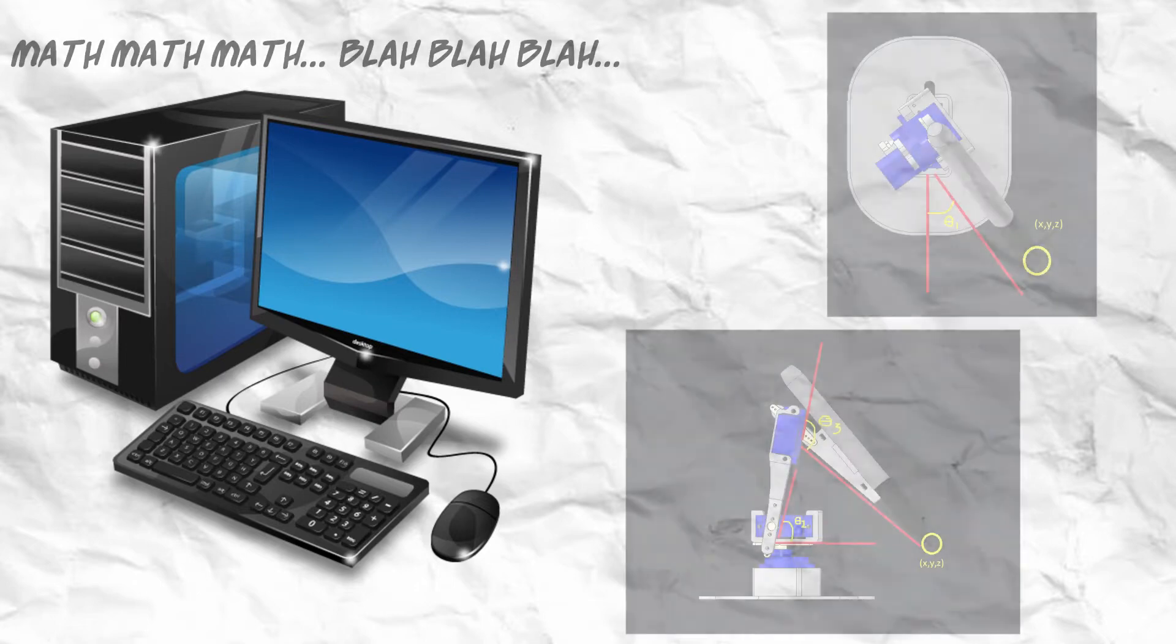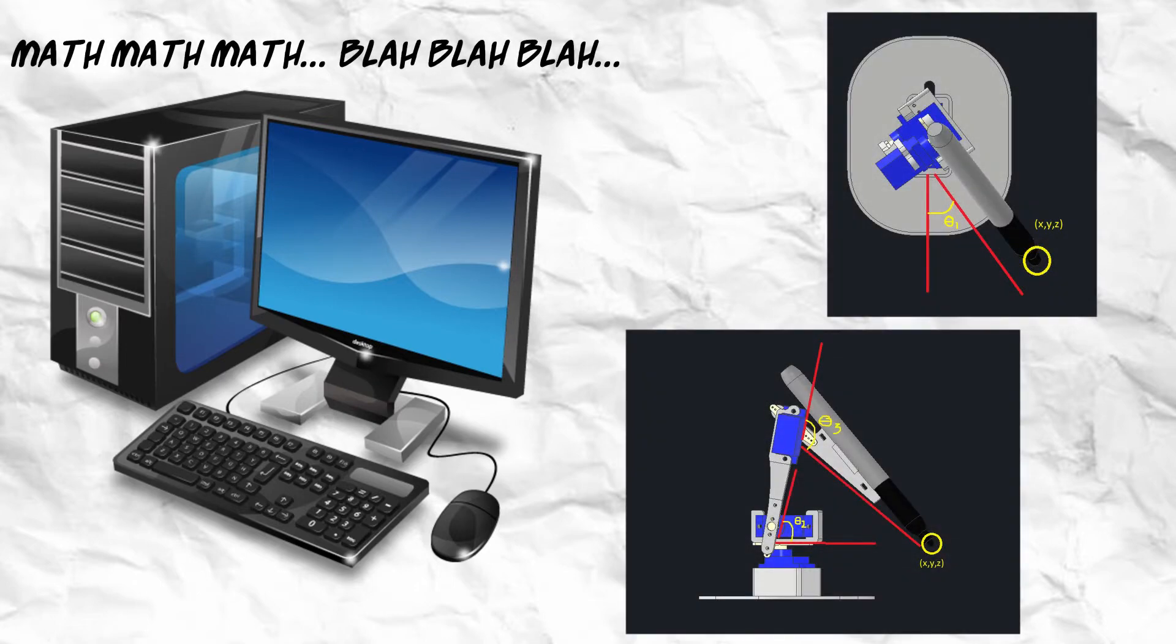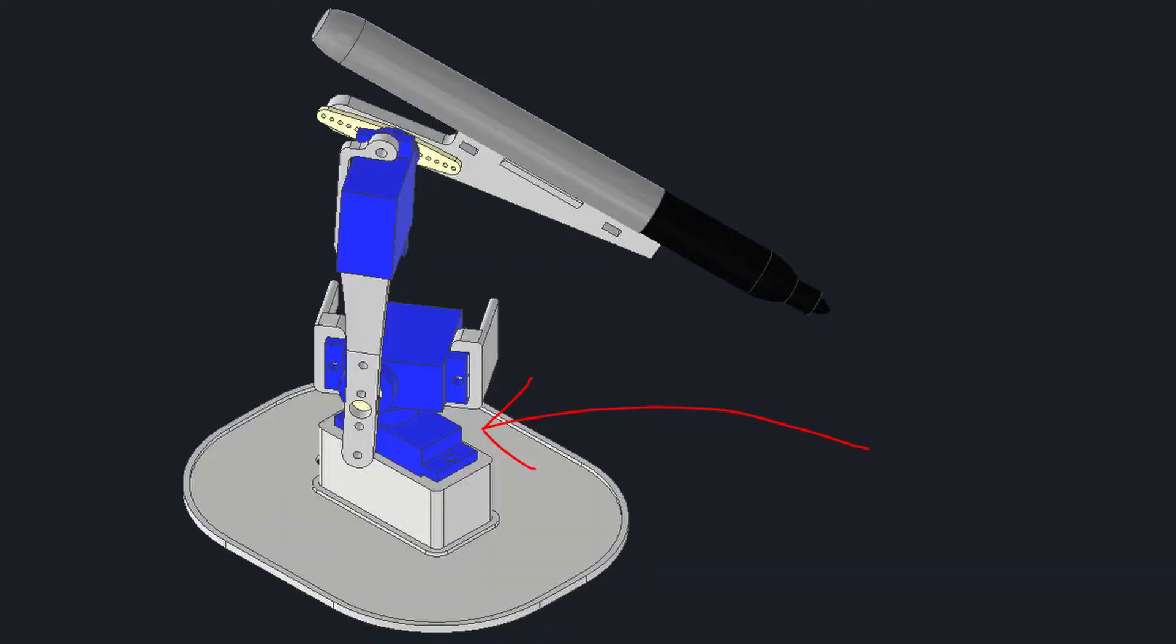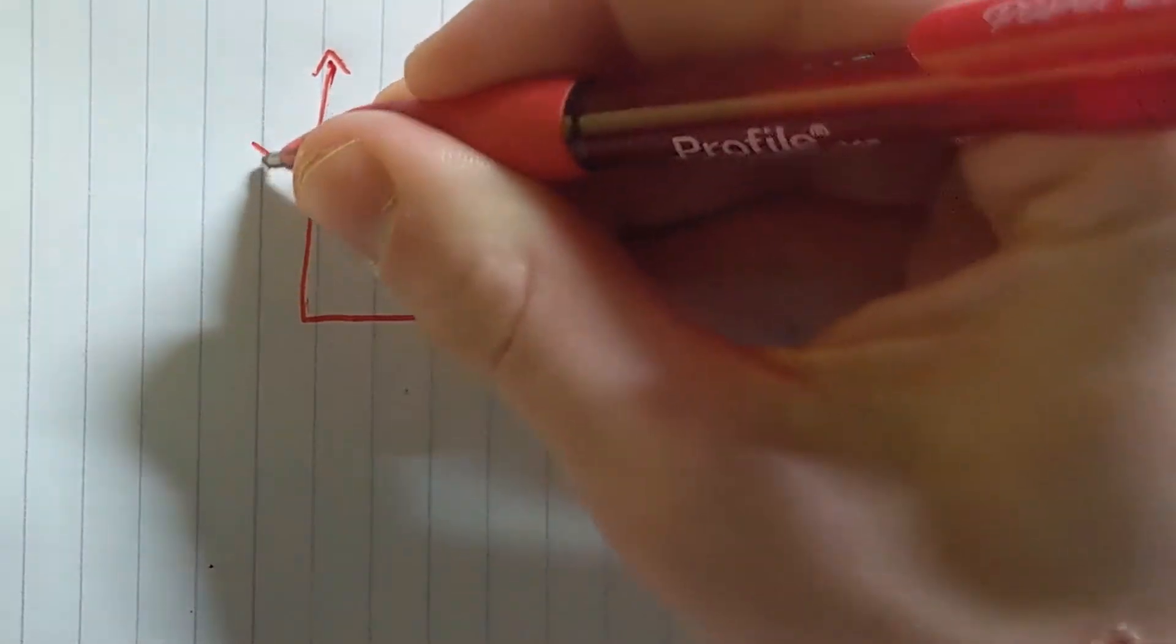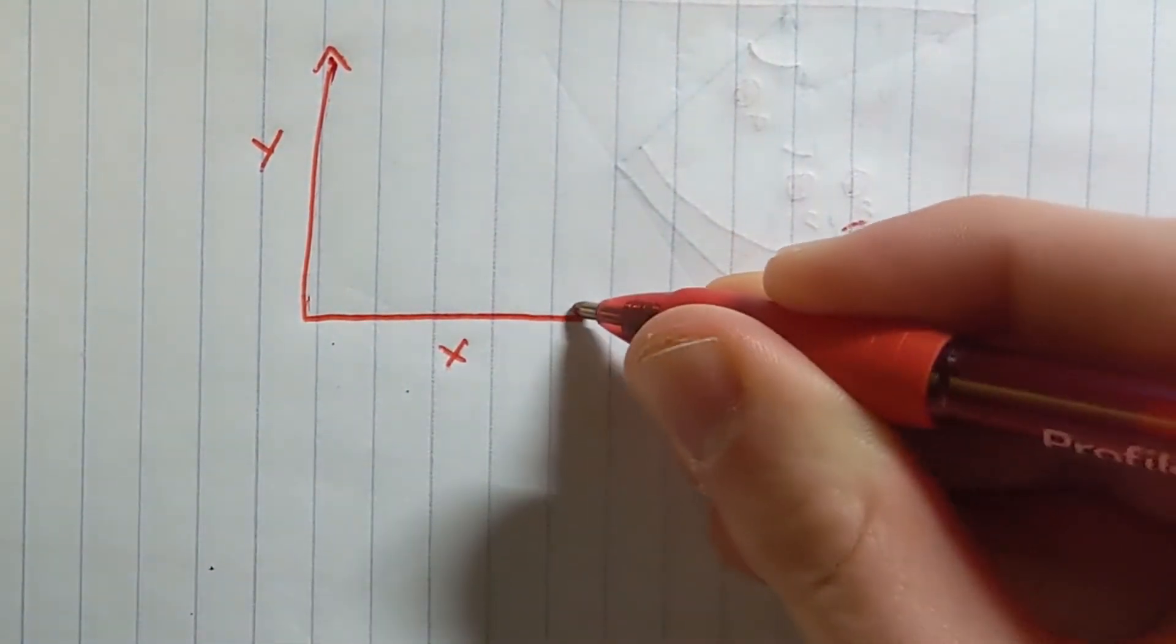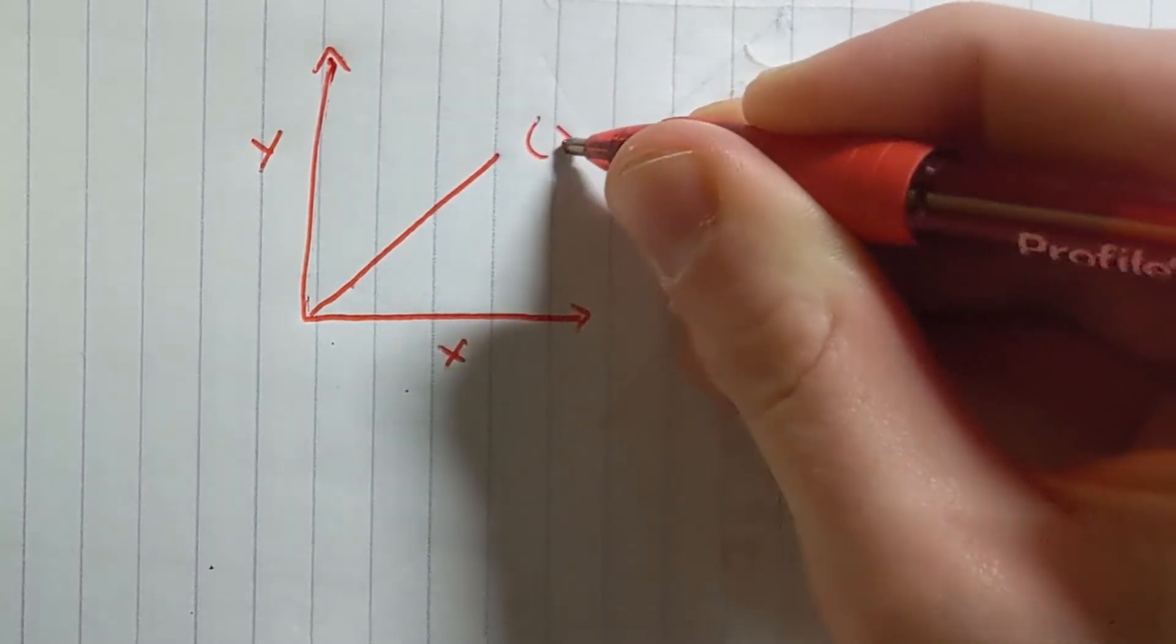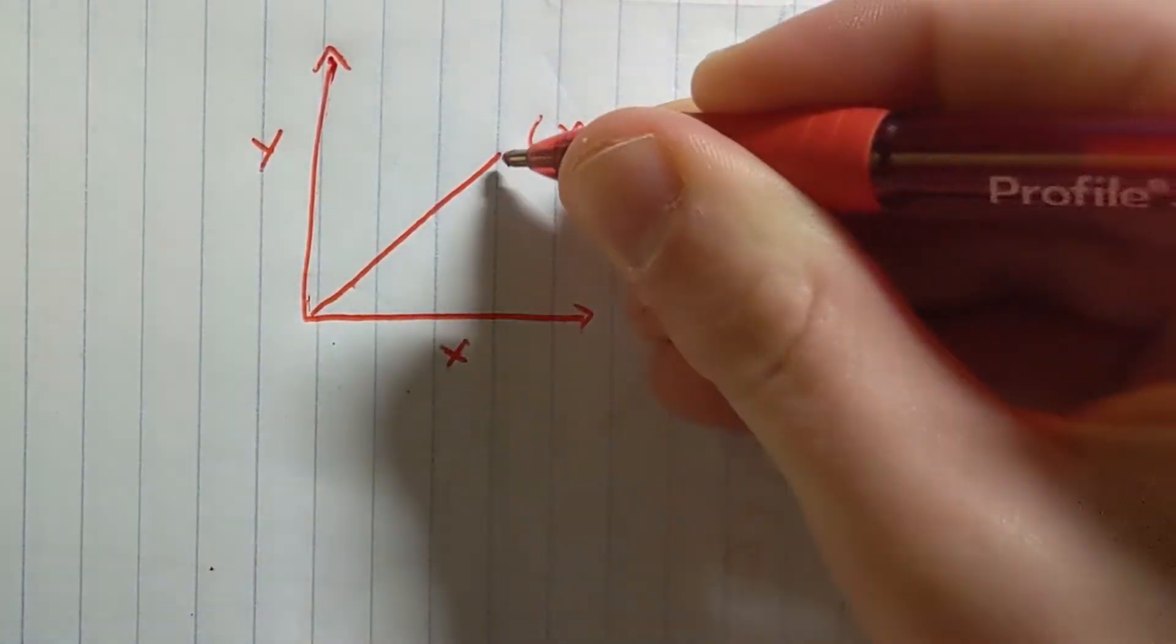The program now has to calculate the angle of all three servos in order to find the position of the end of the arm at the point you supply. The first servo calculated is the base servo. The math of the servo is actually relatively easy. If we look at the arm from a top-down view, we can represent it as a line protruding from the origin of the xy plane. If we draw a right triangle, we can see that the adjacent side always corresponds to the x value.